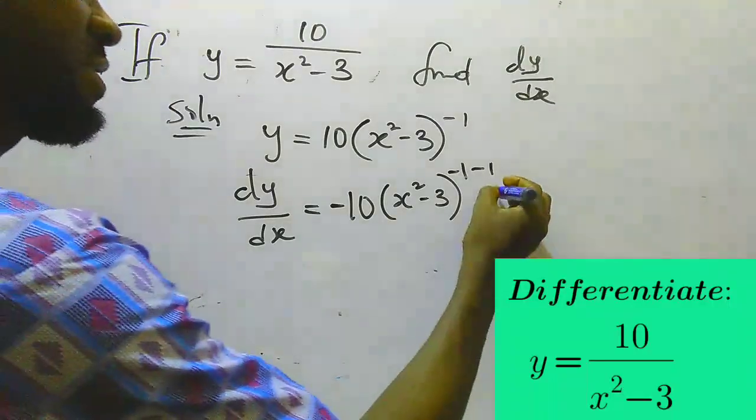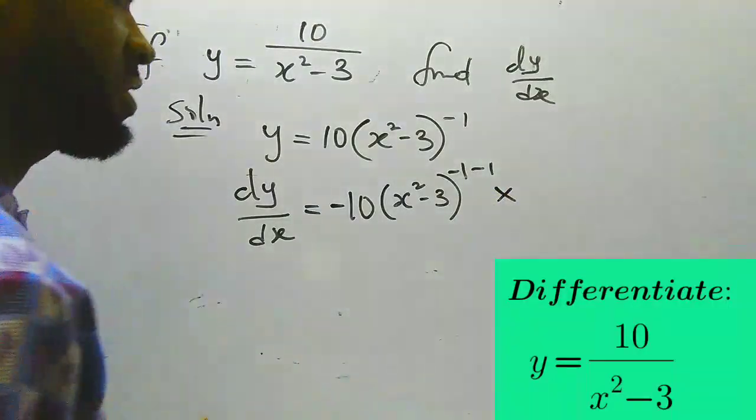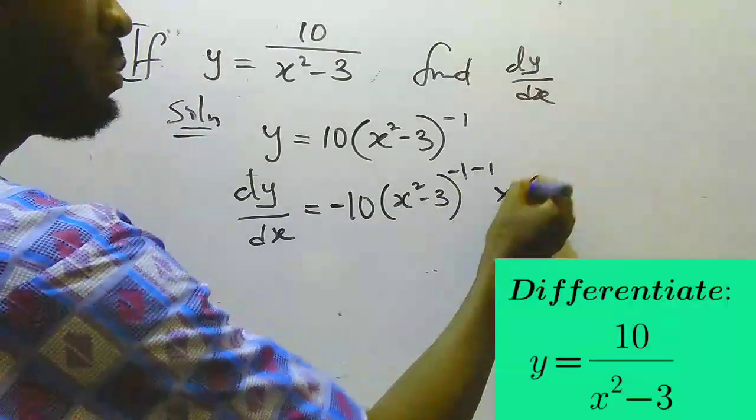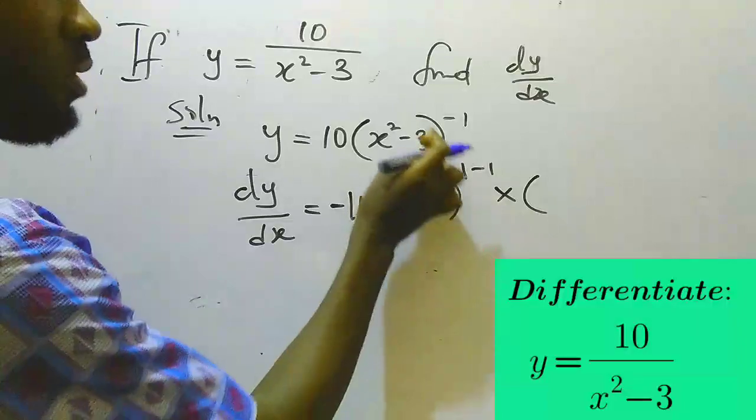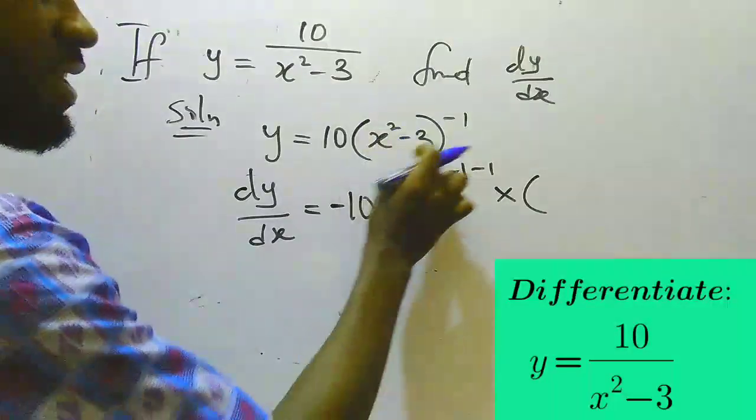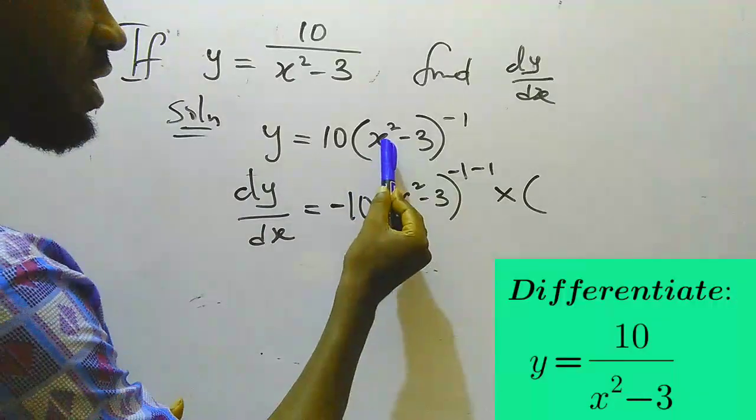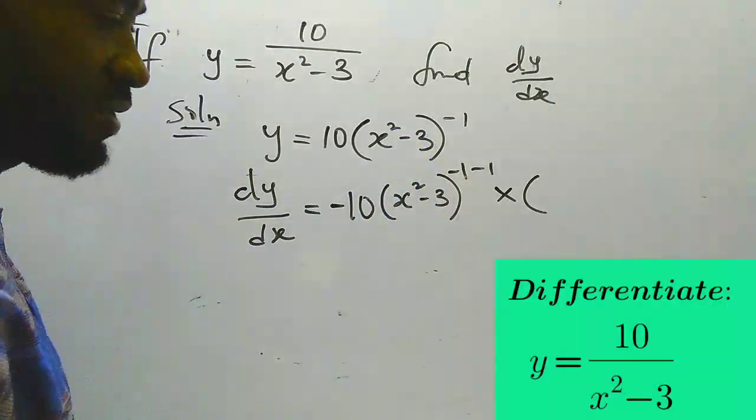And then my last step, step 3, is that I'm going to multiply everything by the differentiation of this term that is inside this bracket. So what's inside this bracket is x squared minus 3. So let's differentiate it.